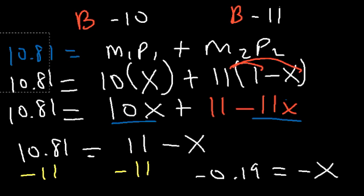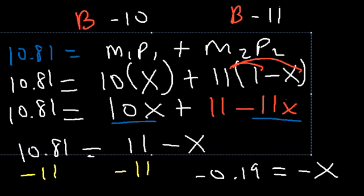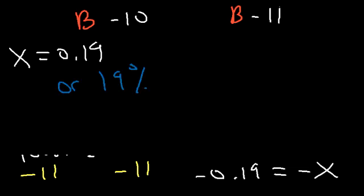So if we multiply both sides by negative 1, we can see that X is 0.19, or 19%. Now X was associated with B10, so that means that 19% of boron is B10.